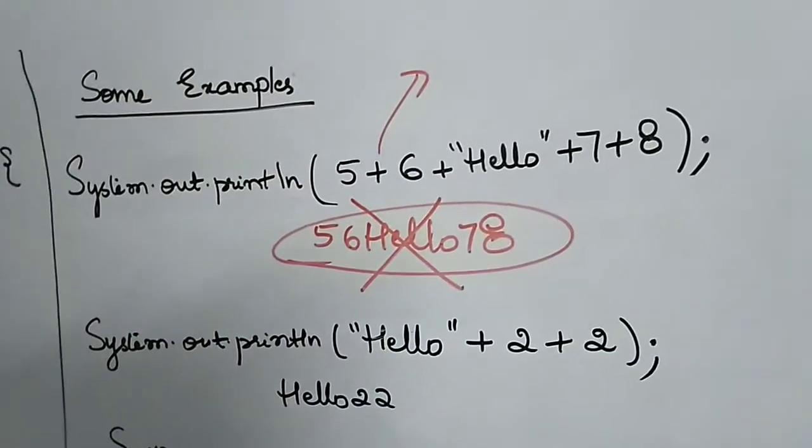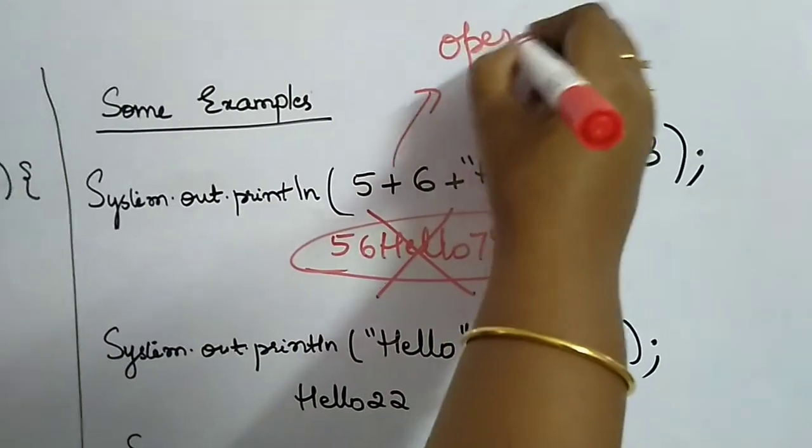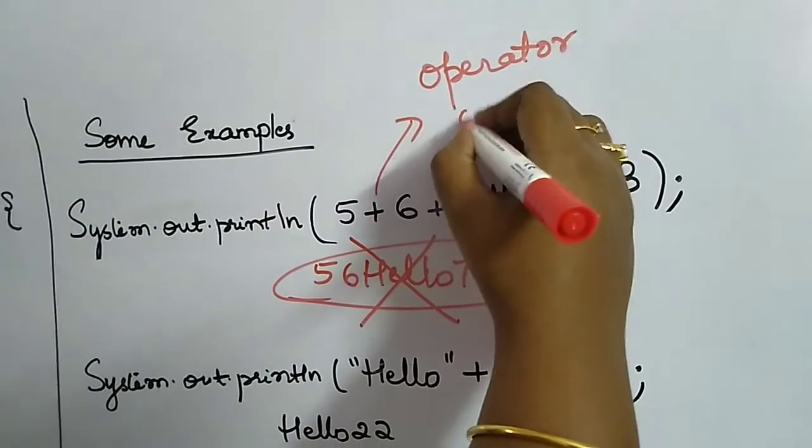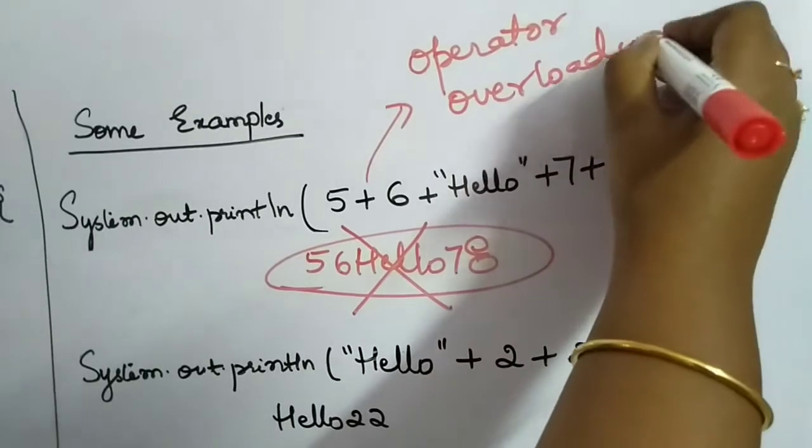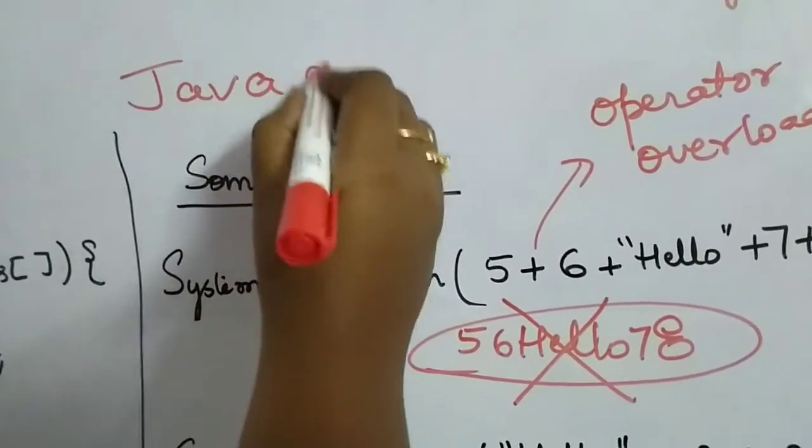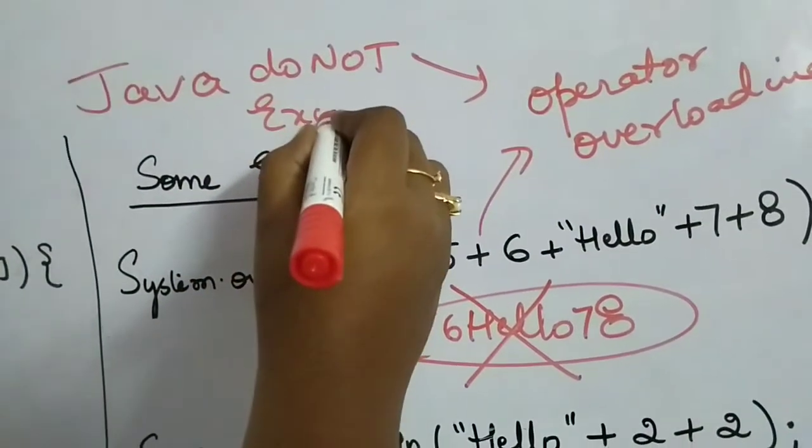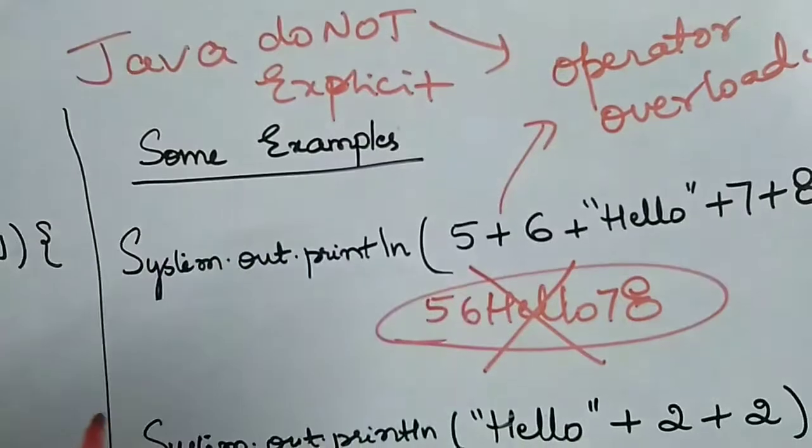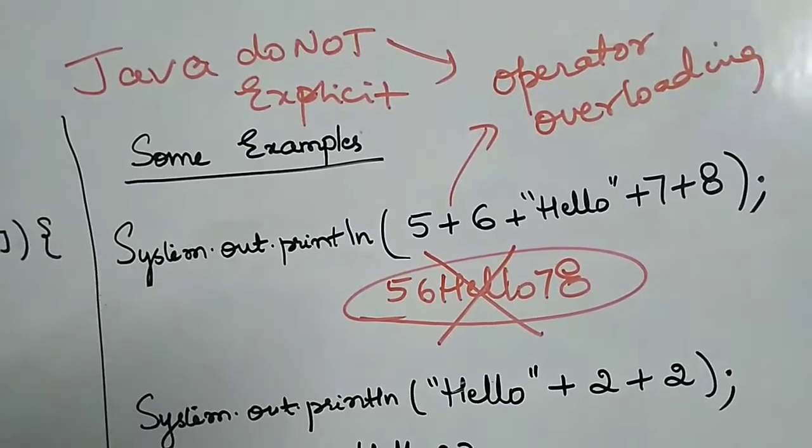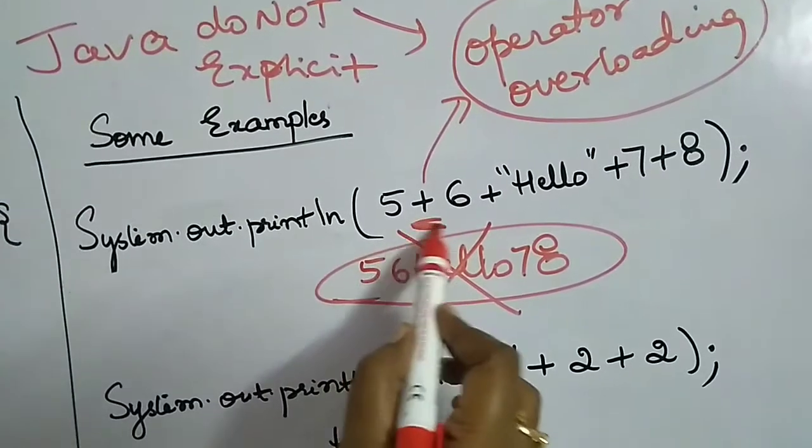One very important thing you need to understand is that plus acts in two forms: operator overloading. Java does not support operator overloading explicitly. Explicitly means that as programmers you cannot perform operator overloading in your programs, but internally Java has operator overloading and an example of that is the plus operator.